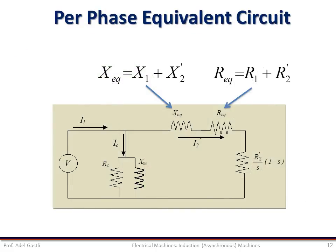So the GAMMA-type simplified equivalent circuit can be represented as shown. Again, notice the similarity between the induction machine and the transformer equivalent circuit.